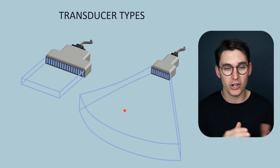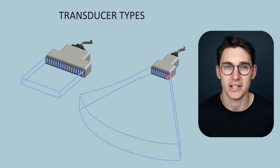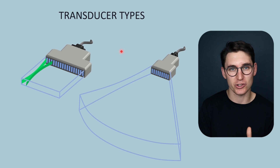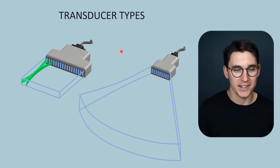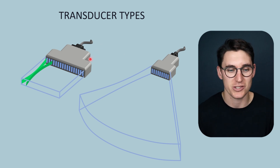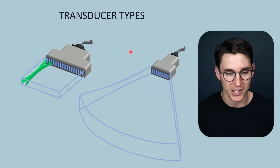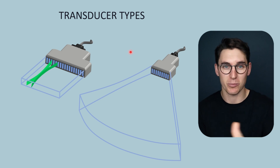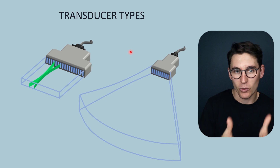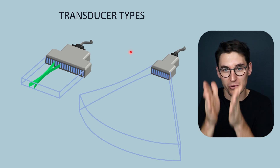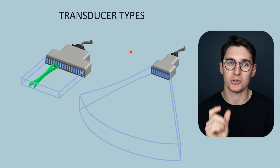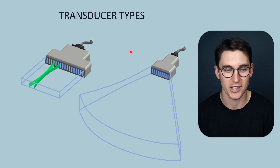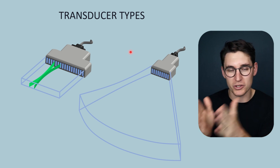Array transducers can be further subdivided into linear arrays and phased arrays — it's really important to understand the difference. A linear array sequentially fires either individual or small groups of transducer crystals at a time. In this example, three crystals are fired to generate an ultrasound wave; once that wave is generated and echoes are received, the firing shifts along one transducer element and another wave is made. We fire multiple transducer elements at a time to allow our near field to be deep enough into the patient's tissue — a concept covered in the next talk.